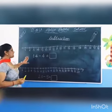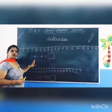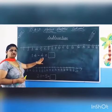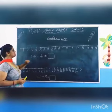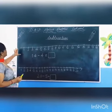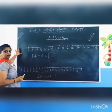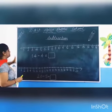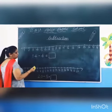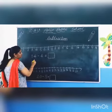For example, 14 minus 4. This is a number line. See carefully.